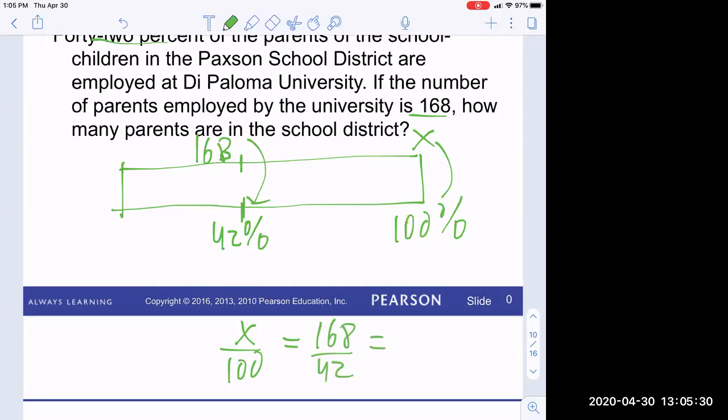I do X over 100 is equal to 168 over 42. You do the math on that. Multiply by a hundred and divide. You get 400. So 400 parents are in the school district. That seems about right. Because if I double this and a little more, it's going to be near 400. So the percent bar allows me to just reason through the problem, put my numbers in there, and I'll have to get three of them from the problem. And the fourth one is what I'm looking for.